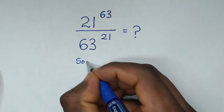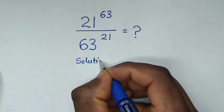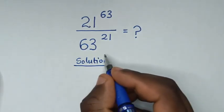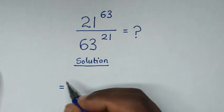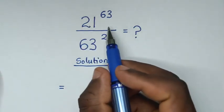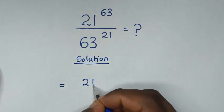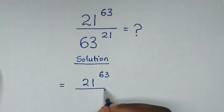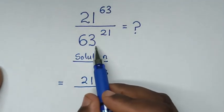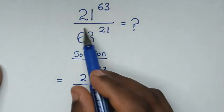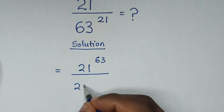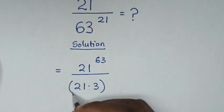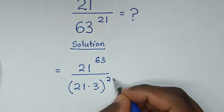Now, solution. From this, our problem here it will be equal to: in the numerator it is 21 power of 63 over, in the denominator it is 63 power of 21. So 63 is the same as 21 times 3, then bracket power of 21.